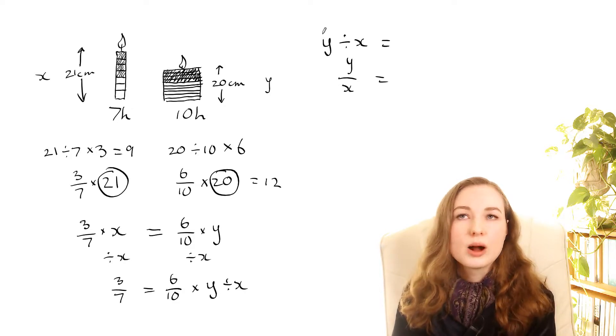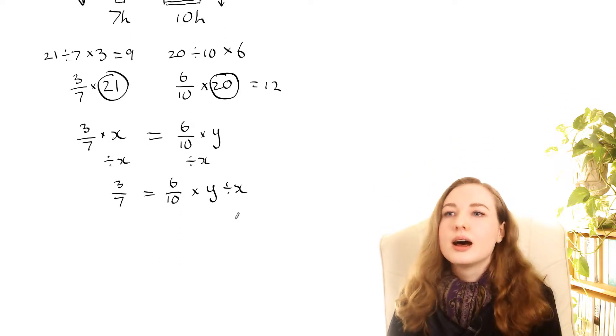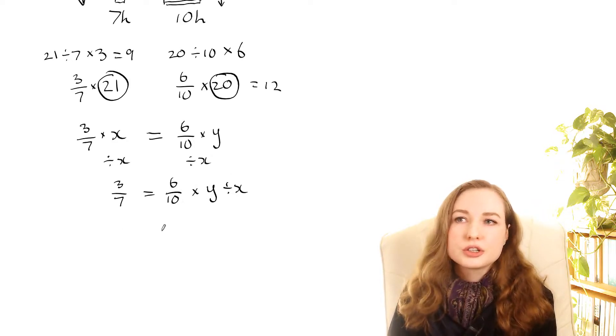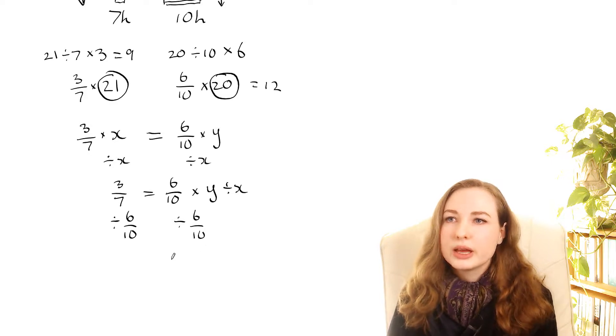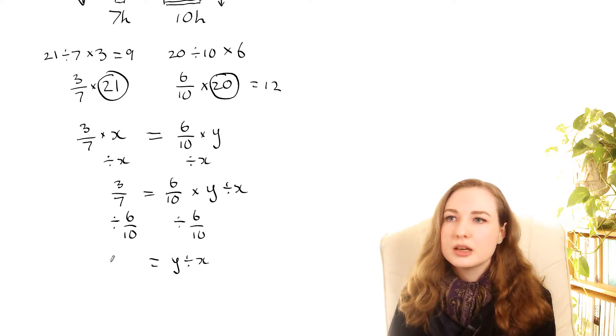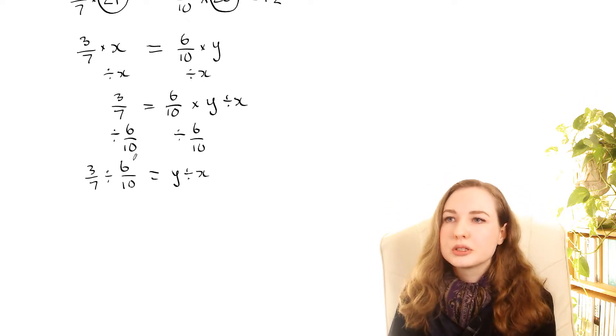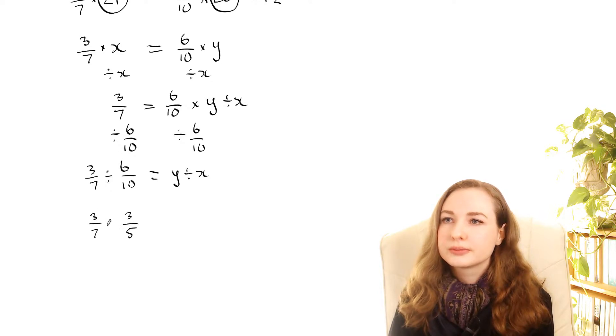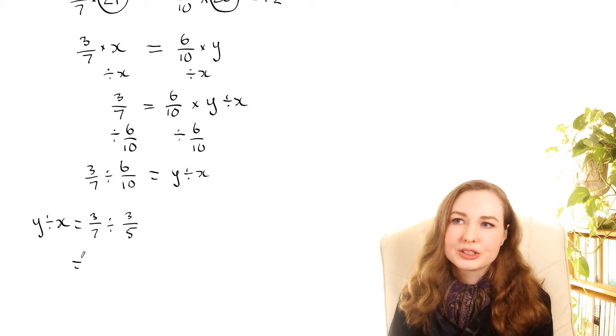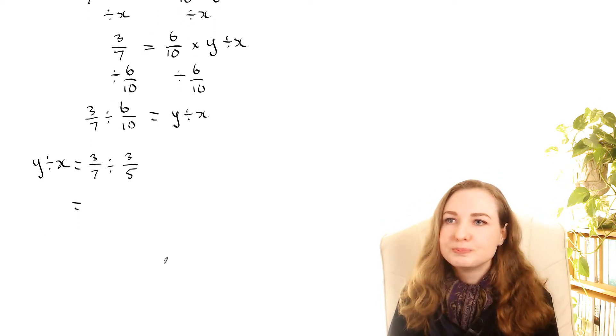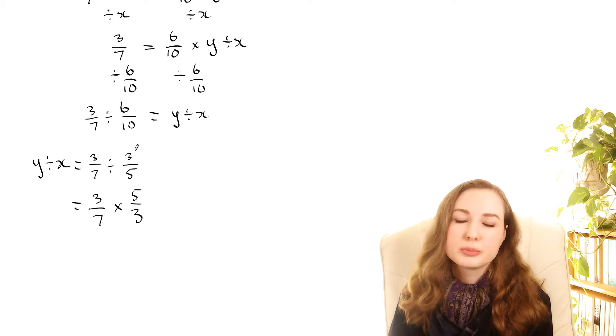And then because we just want to have y divided by x by itself what we want to do is get rid of this 6 over 10. So move that over the other side. And to do that because it's multiplied by the rest of this stuff to shift it across we divide. So divide by 6 over 10. And so we end up with y divided by x on the right and on the left we've got 3 over 7 divided by 6 over 10. So we just need to work out what that is. We could simplify this first of all. So 3 over 5. And you know what I'm just going to put this over the other side because then you don't have to rewrite it each time you can just say equals and leave this blank. Okay now to divide by a fraction we multiply by the reciprocal. So times 5 over 3. Reciprocal just means flip it upside down.